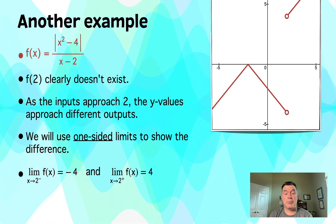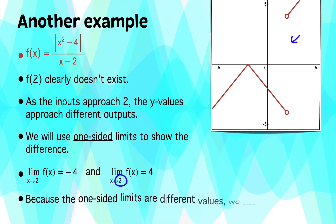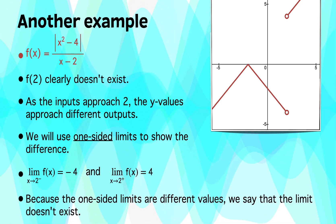Now if we switch gears and we approach 2 from the right, that's what that little plus means. That means that the y-values are approaching positive 4 as you can see from the graph up there. So because the left-hand limit and the right-hand limit aren't the same, we aren't approaching the same y-value from either side, we can say that the limit does not exist.